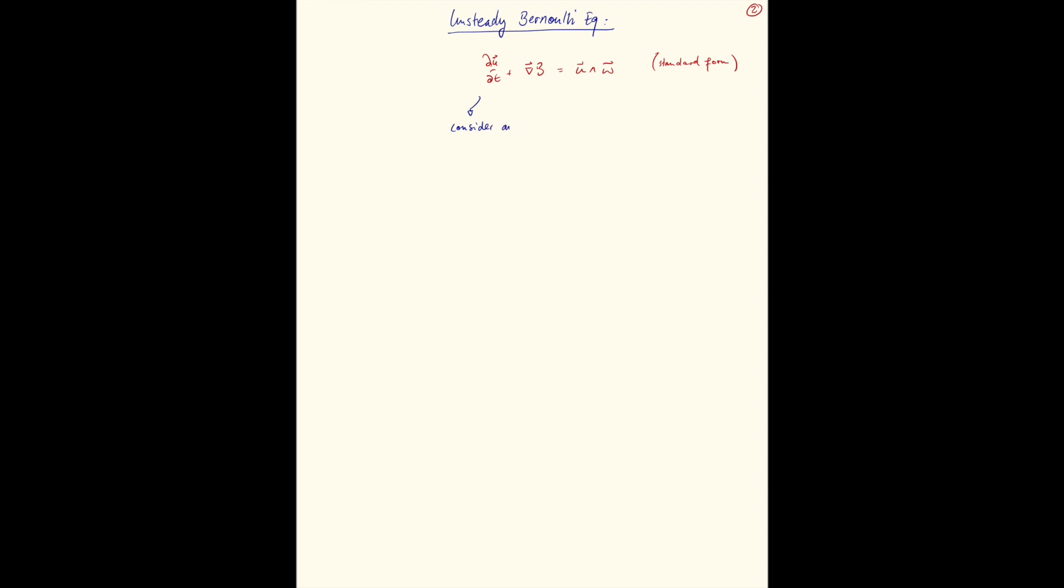Let's consider an irrotational flow which means omega is zero. Which also means that the curl of u, which is just omega, is zero. And u cross omega is zero.